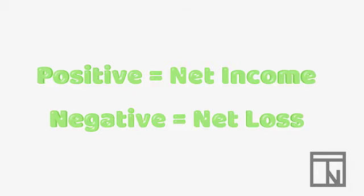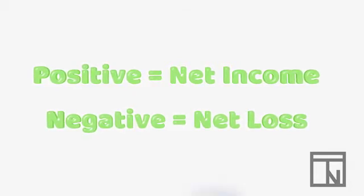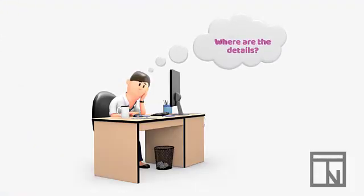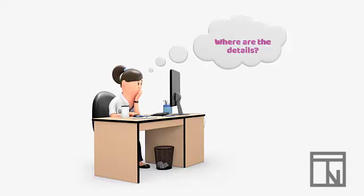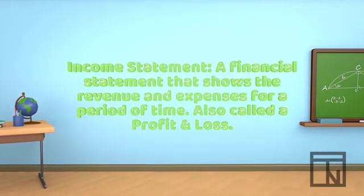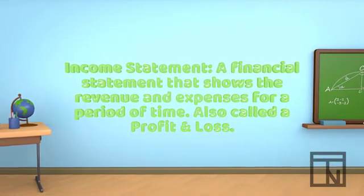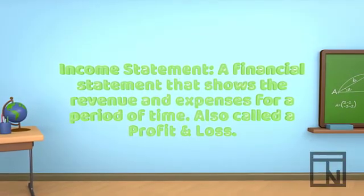If the number was negative, meaning she had more expenses than income, it would be a net loss. But most stakeholders don't just want the net income or net loss number. They usually want the details of the expenses and revenues that make up that number. We can provide them these numbers using a special financial report called an income statement. An income statement is a financial report that shows the revenue and expenses for a period of time. Sometimes this report is also called a profit and loss statement.